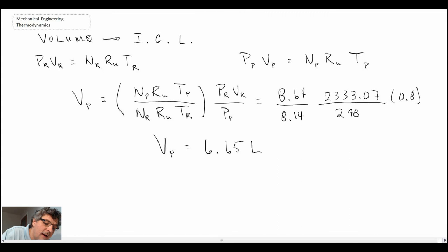And what we find is that if we have constant pressure allowing our piston cylinder device to expand, we get up to 6.65 liters. So we're going from 0.8 liters all the way up to 6.65 liters if we allow it to freely expand.